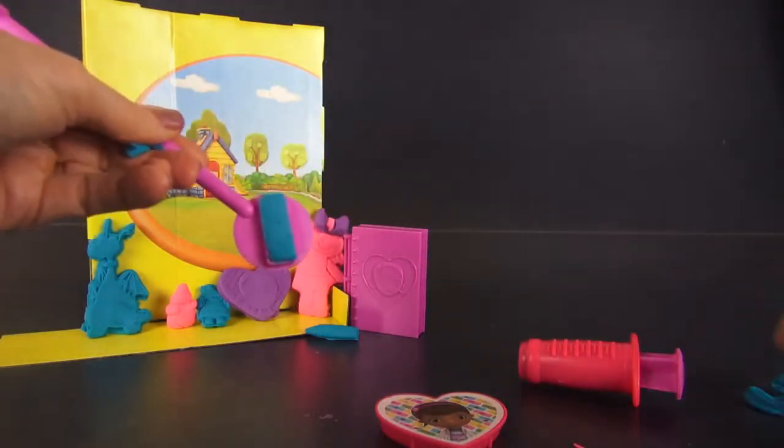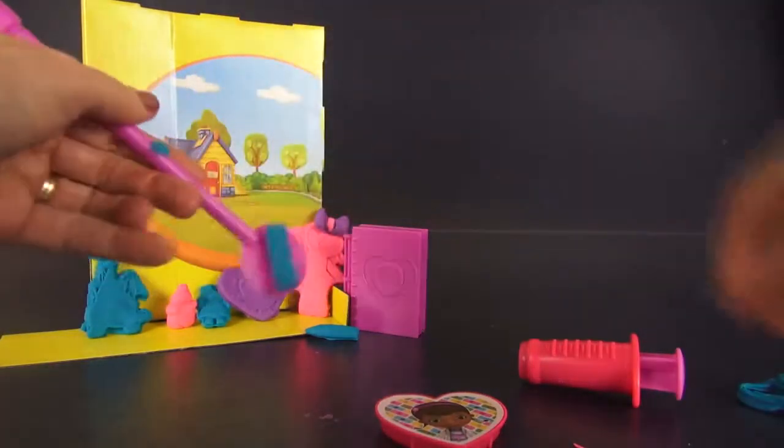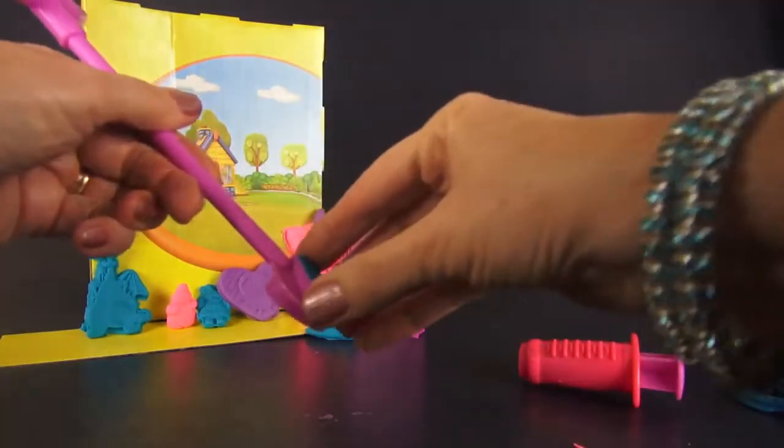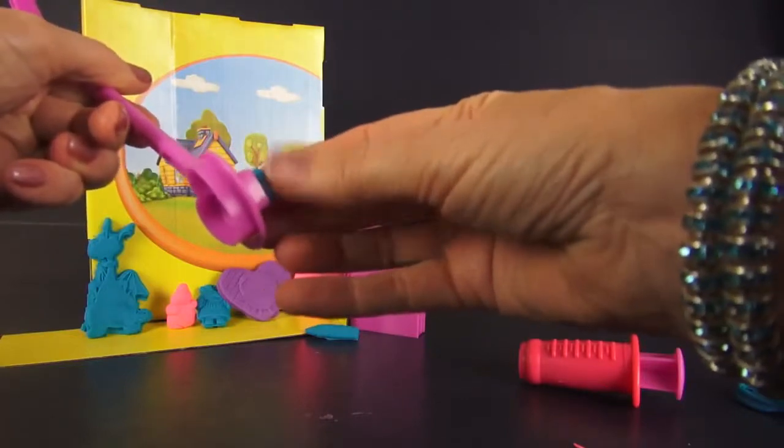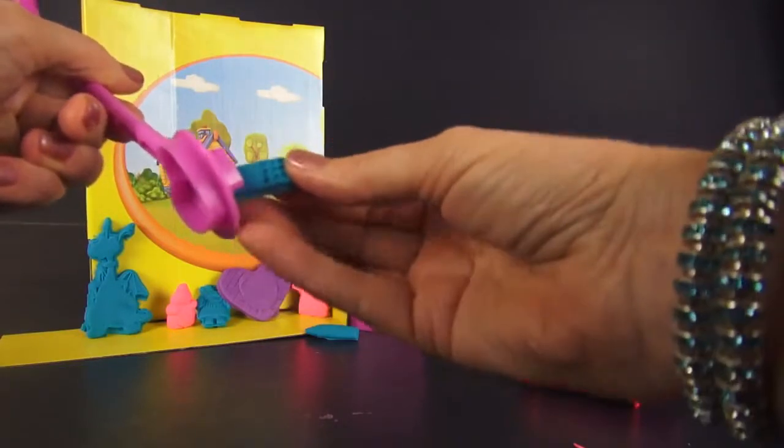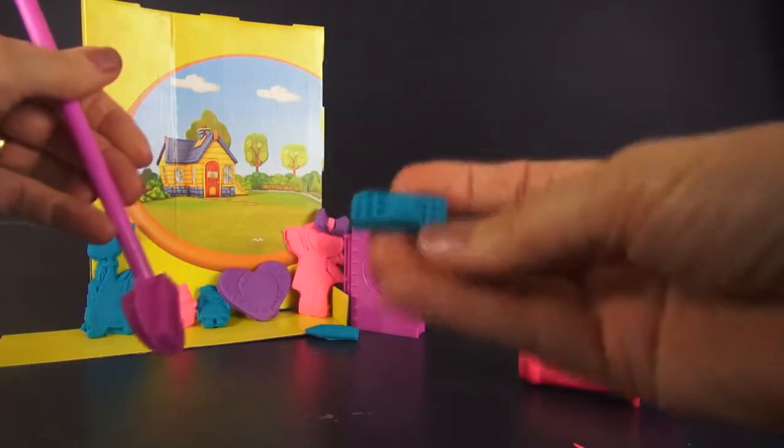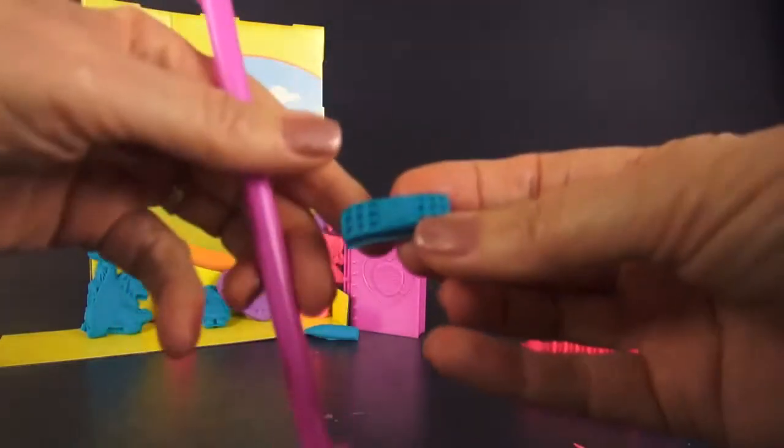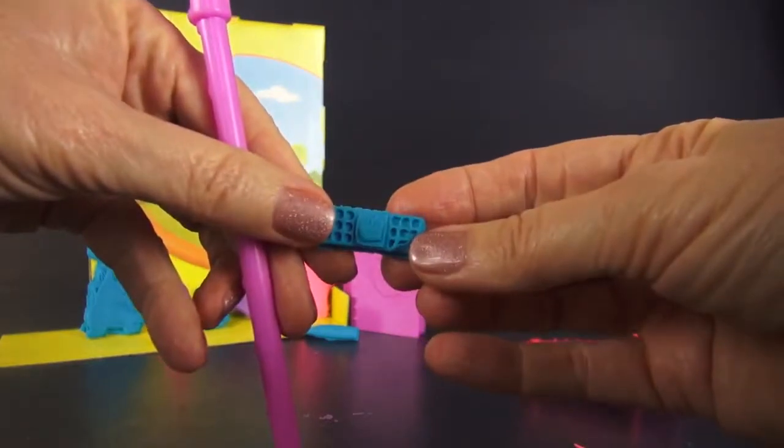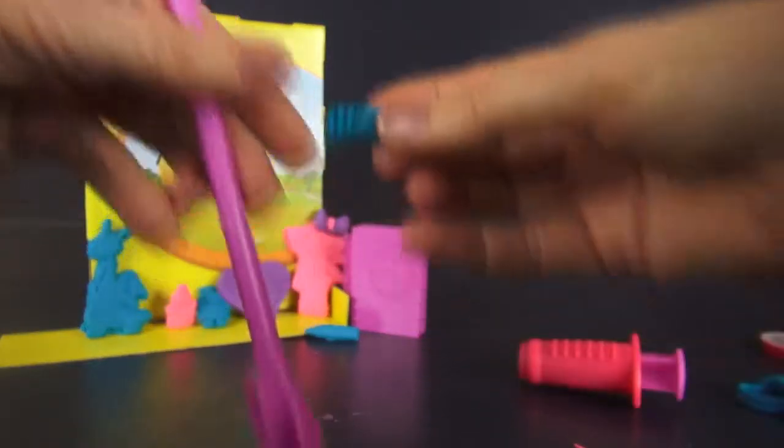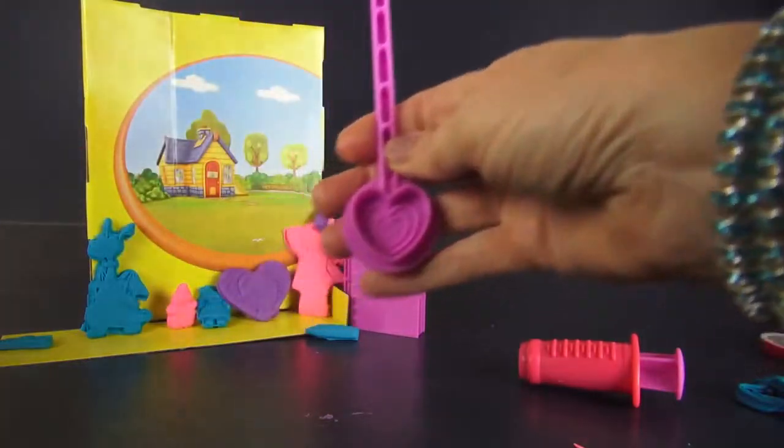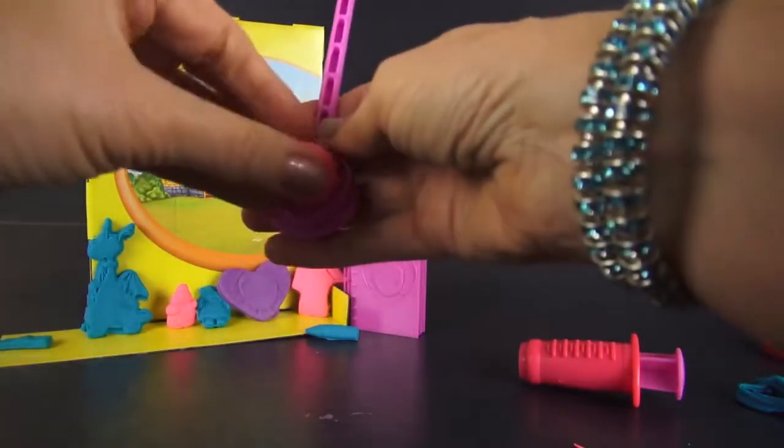Here we go. There we go. Look. I love this band-aid. It's got a heart on it. I don't know if you can see that. There we go. Isn't that adorable? That would make me feel better just getting a band-aid with a heart on it.